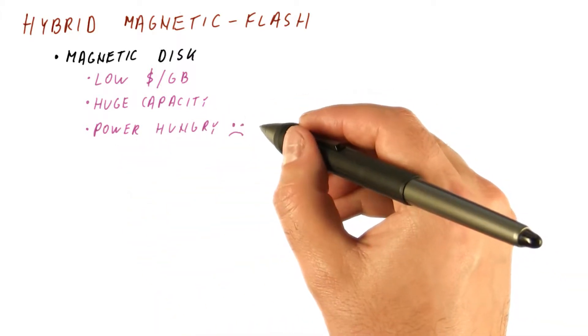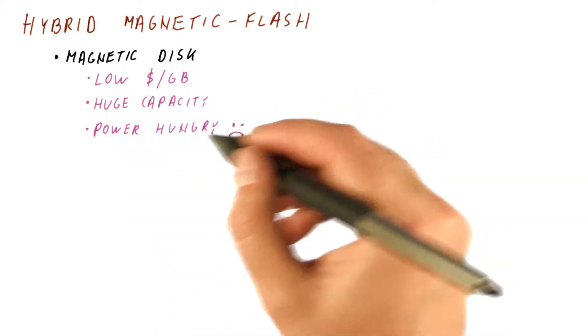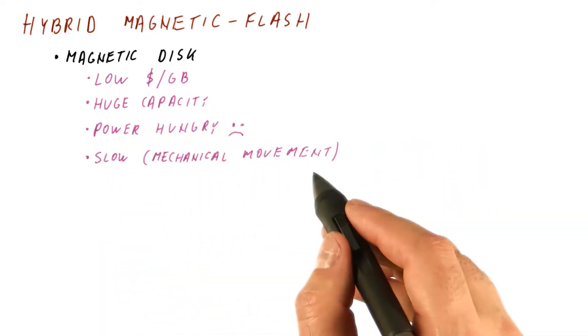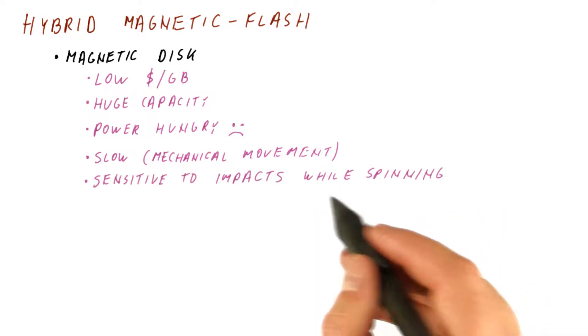They spin and consume power even when not accessing data. They're very slow because they have to mechanically move things around to access data.